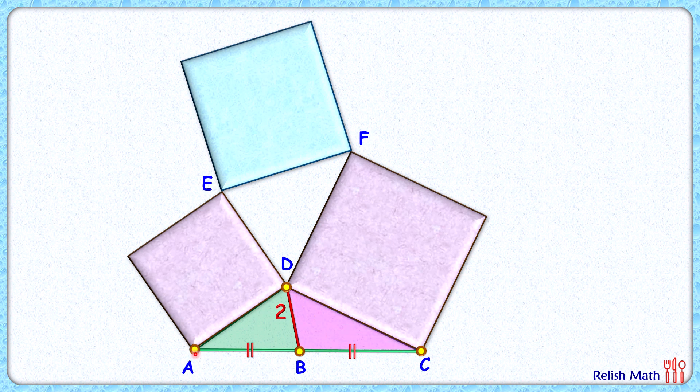Now B is the midpoint, so AB length and BC length are equal, let's say 'a' centimeters each. Now here this blue angle and green angle, they are supplementary. Now AD length and DE length, they are equal, they are sides of the square.